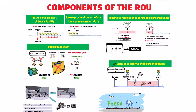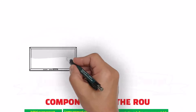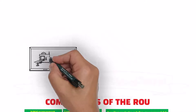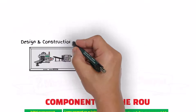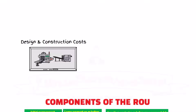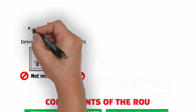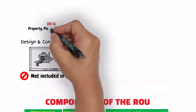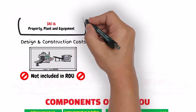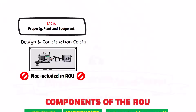These are the components of the right of use asset. Please note that there are some costs that are not included in the right of use asset. These costs are the costs paid by the lessee for the construction or the design of the underlying asset. These costs are not part of the right of use asset. Instead, they should be accounted for using the relevant standard, like for example IAS 16.